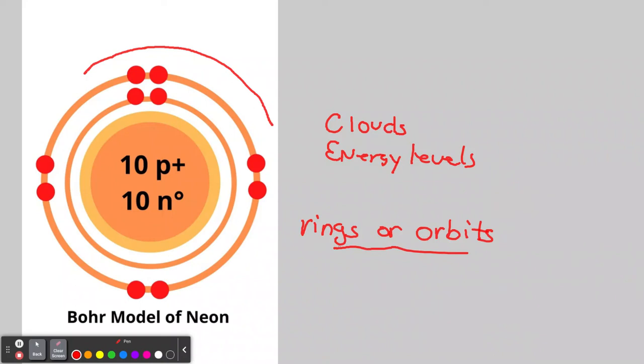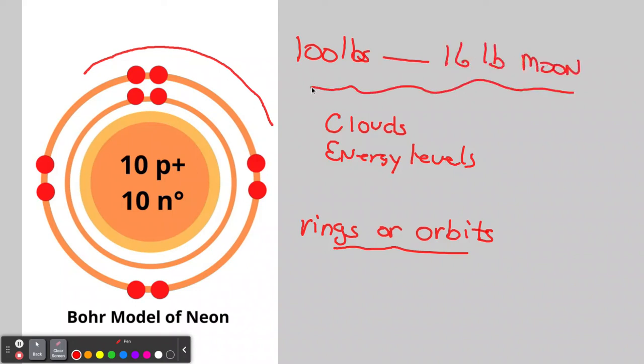To review: matter is anything that has mass and takes up space. Mass doesn't change when you go to the moon, but your weight does because gravity and weight are related — it's the force gravity exerts on you. If you weigh 100 pounds on Earth, you'd weigh about 16 pounds on the moon. That was the first part on matter and atoms. In the next video we'll talk about the periodic table and how we arrange these atoms.